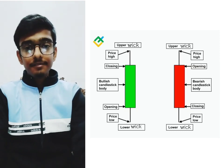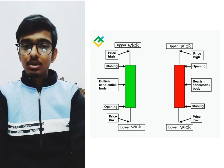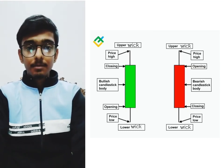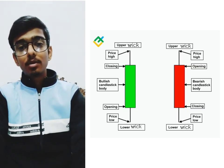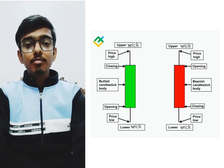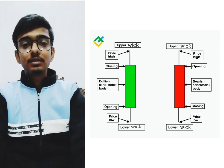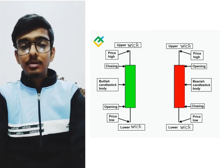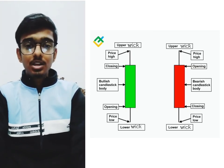Now, the nature of the body. If the closing point is higher and the opening point is lower, then the body is bullish. If the closing point is lower and the opening point is higher, then the body is bearish. A green body shows that people are expecting a rise in the price of the share in the near future, and a red body shows that people are expecting a downfall in the price of the share in the near future.